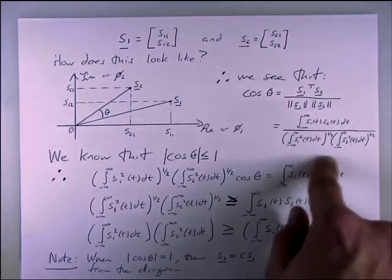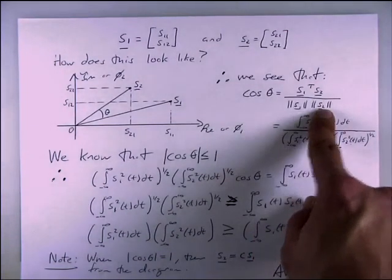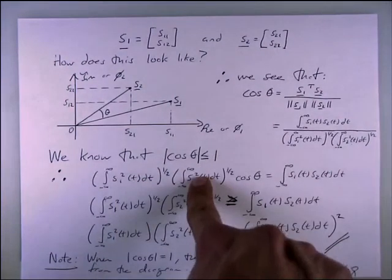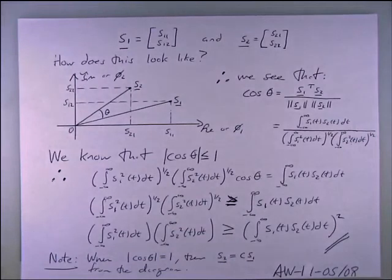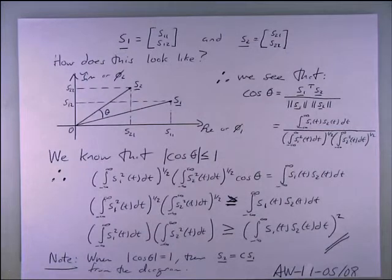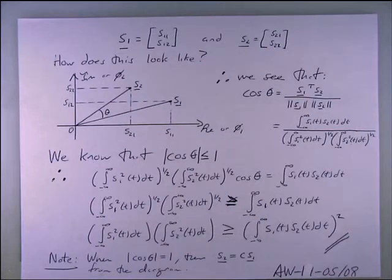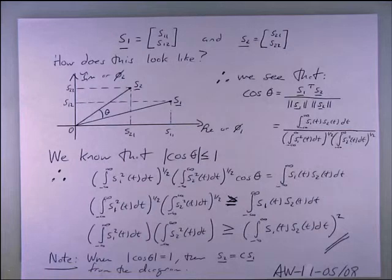We have s_1 dot s_2, which equals ‖s_1‖·‖s_2‖·cos(θ). The inequality comes from the fact that |cos(θ)| ≤ 1, so removing cos(θ) means the left-hand side is guaranteed to be less than or equal to ‖s_1‖·‖s_2‖. That's equality when cos(θ) = 1 — that's how we prove Schwartz's inequality.